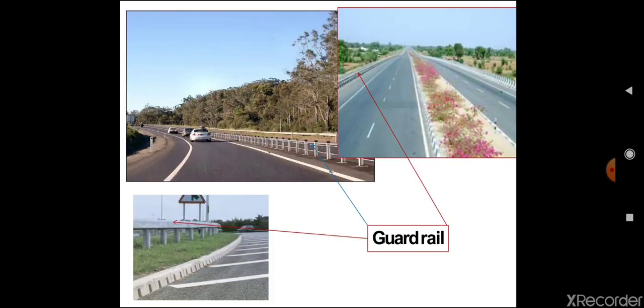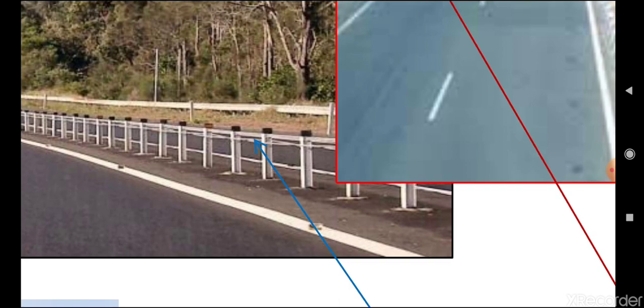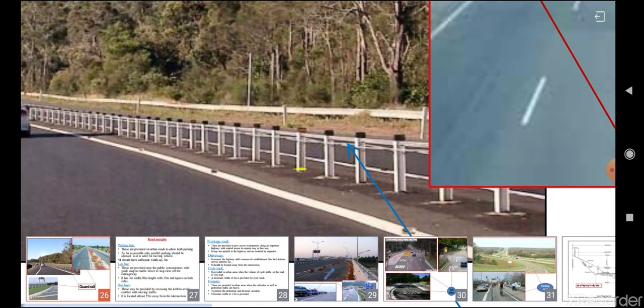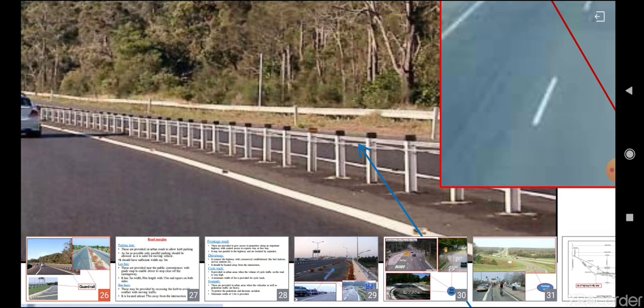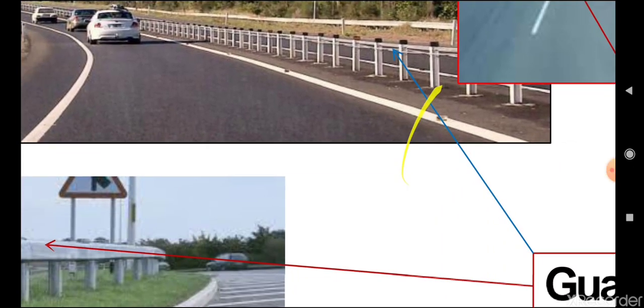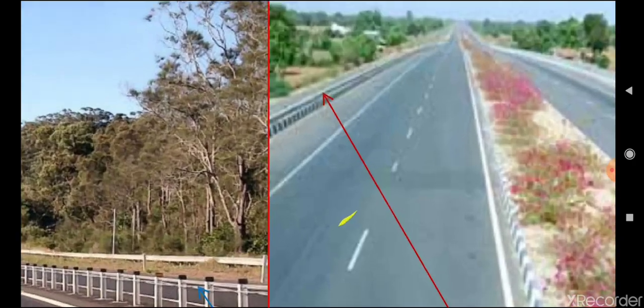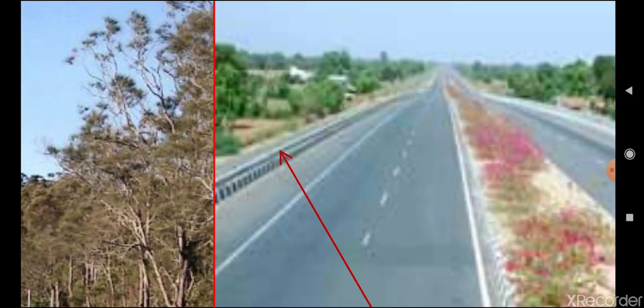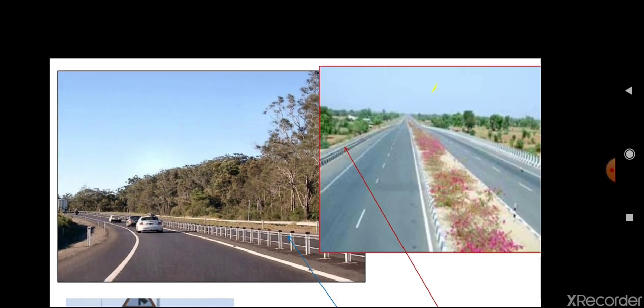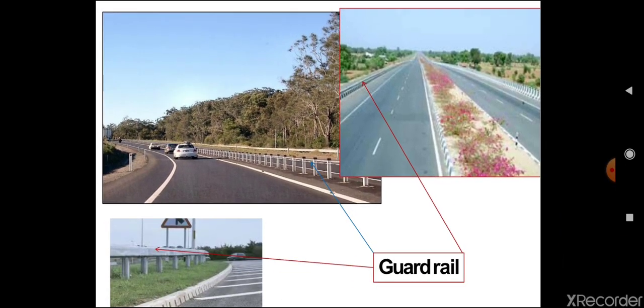In this picture you can see what a guard rail is and how it is provided. Here you can see a guard rail made of aluminium, and also a guard rail made of concrete. Guard rails are provided when the height of road is more than 3 meters.